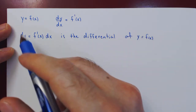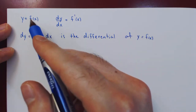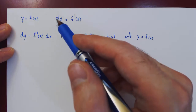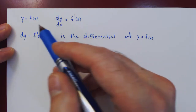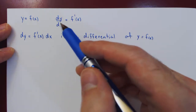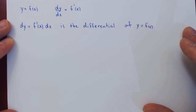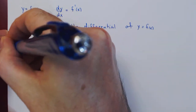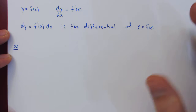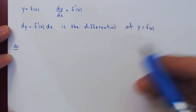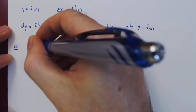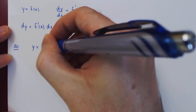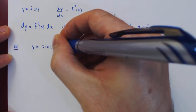Of course, if we have a function of not x but some other variable, then we will differentiate with respect to whatever the independent variable is. So let's look at three examples of this. Let's start with a function of x, so y is equal to the sine of x cubed.